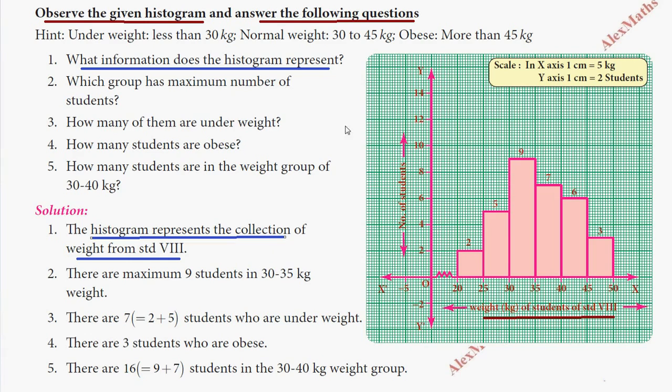Question number two: Which group has the maximum number of students? Looking at the histogram, the maximum is 9 students. The group with maximum number of students is 30 to 35 kg, where there are 9 students.